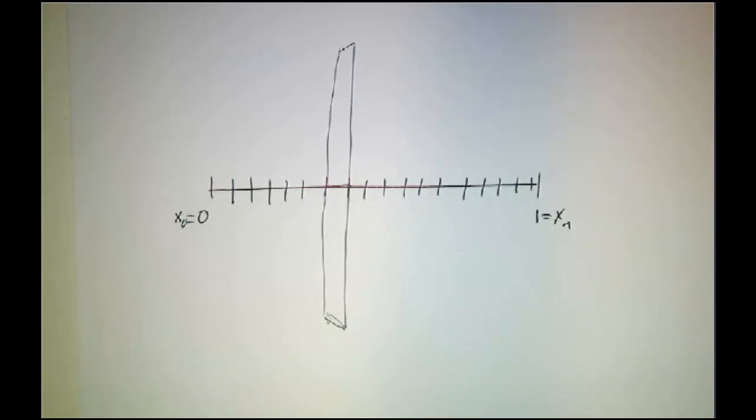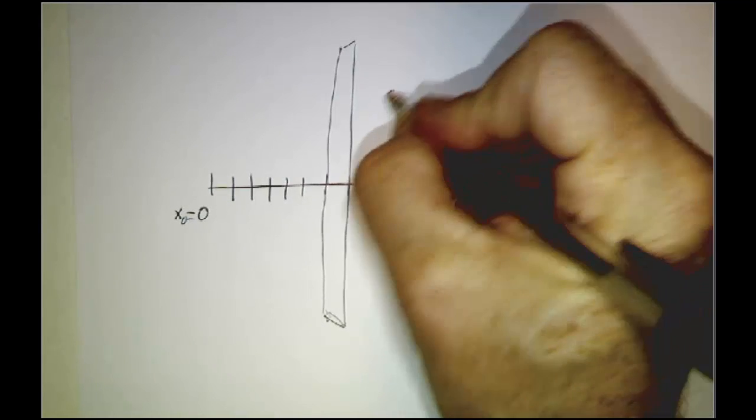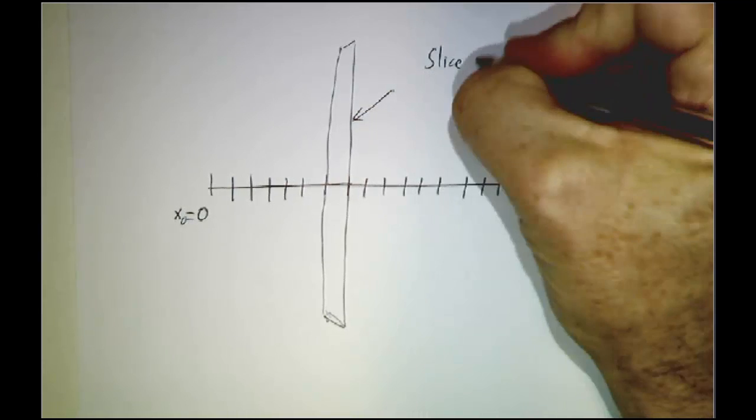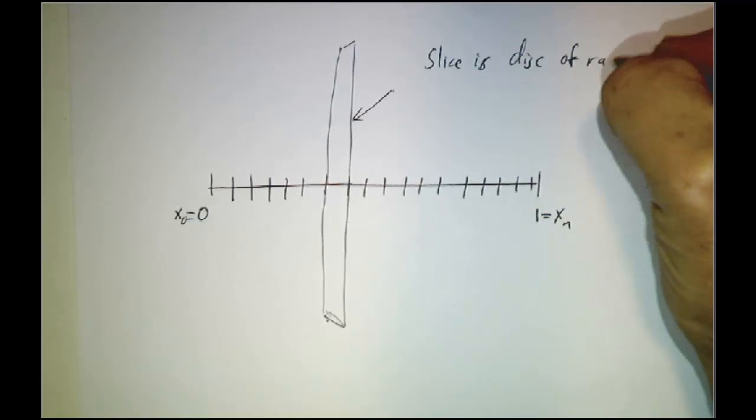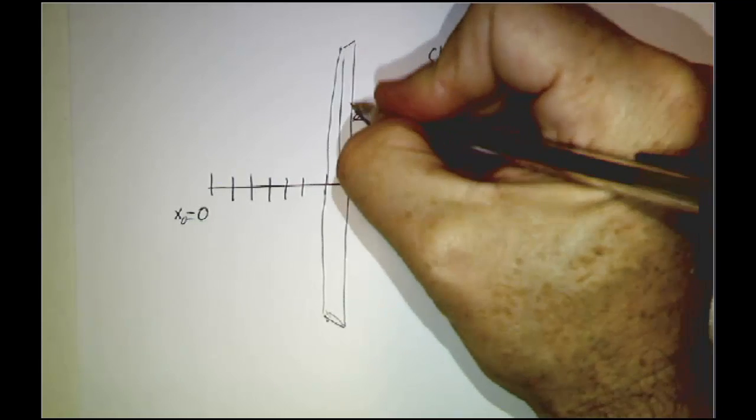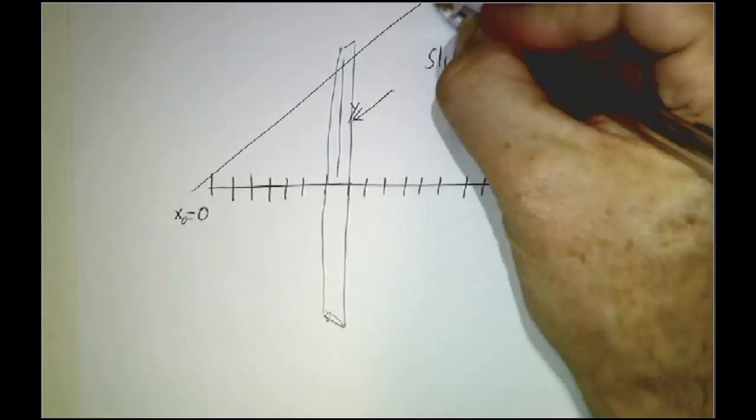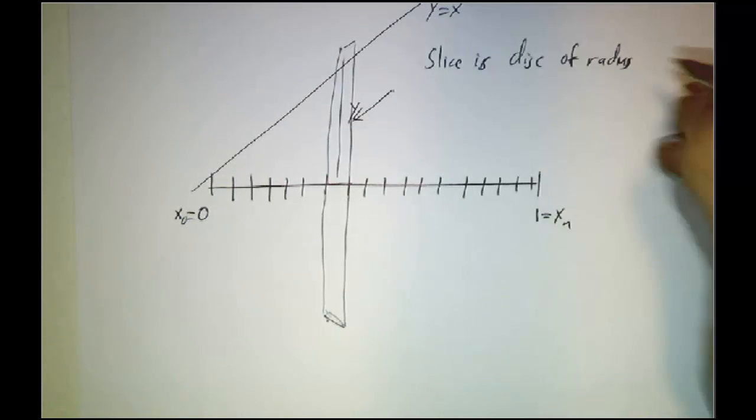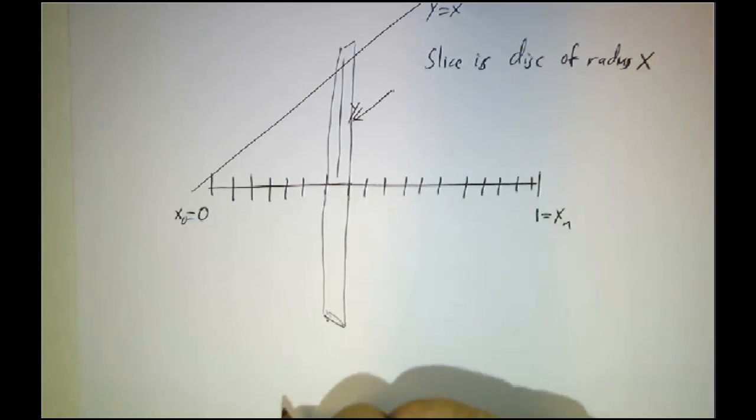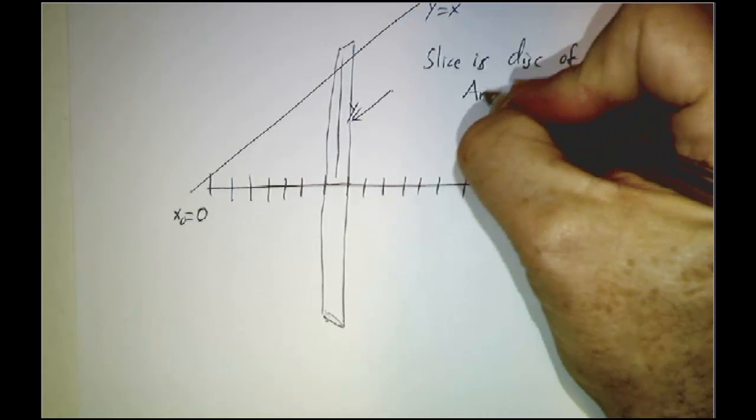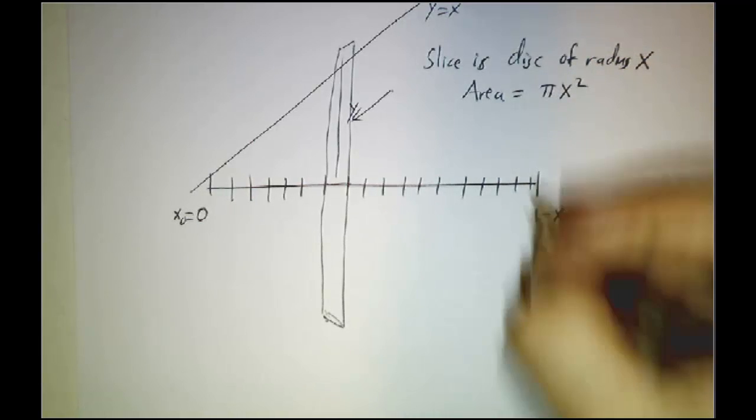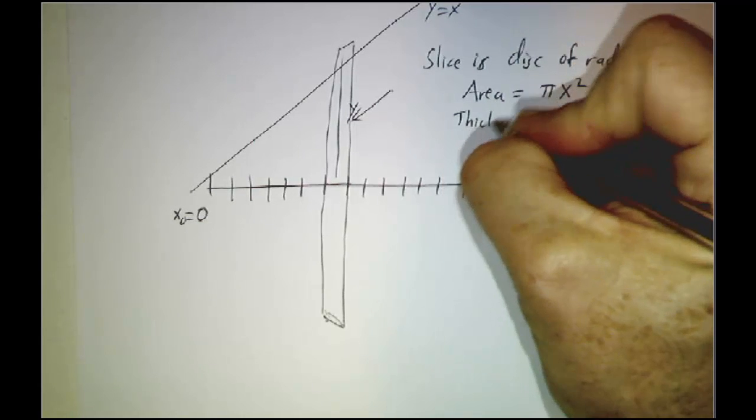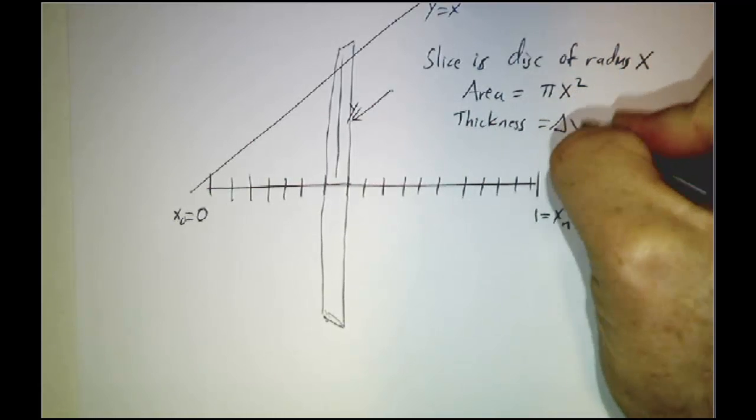So the slice is a disk of radius, let's see, the radius is y. But we said that this was along the curve y equals x. So the radius is x. And so the area is going to be pi times x squared.